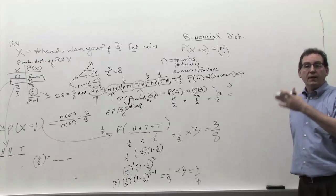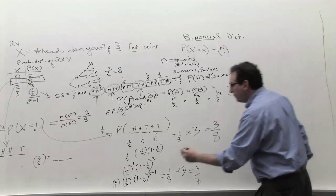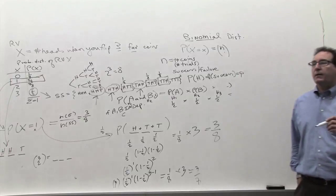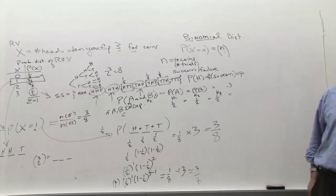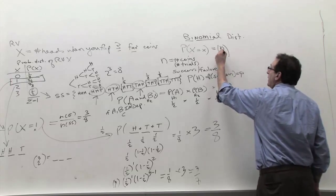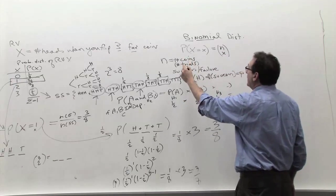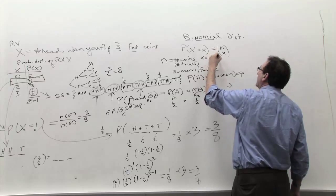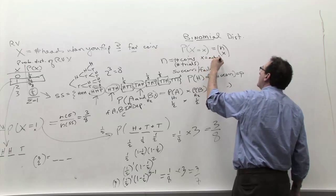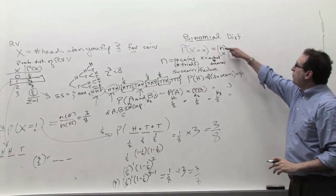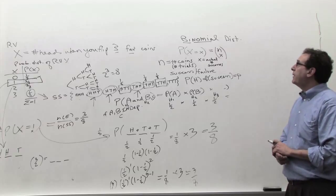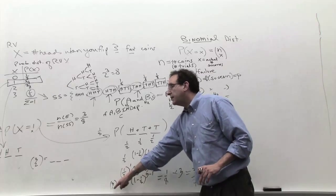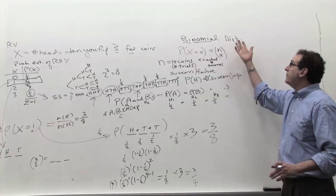At this point I want you to create the formula. We need the chance of a success — the chance of a head — symbolized by little letter p. So n choose x corresponds to three choose one because we have three coins and one has to be a head. In general: how many coins you have and how many you want to be heads or successes. x equals the actual number of successes you're looking for in that particular problem.